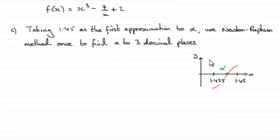We know that alpha already lies in this interval between 1.425 and 1.45, and that we discovered that from the first part of the question. So how are we going to do this?